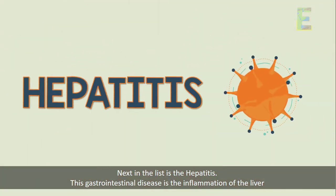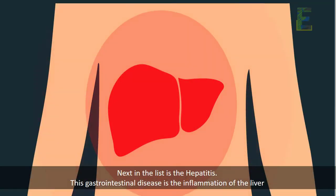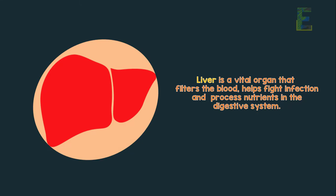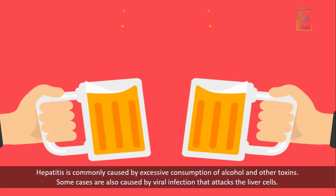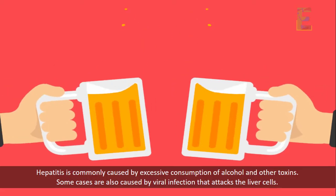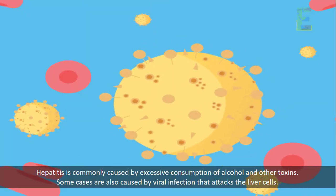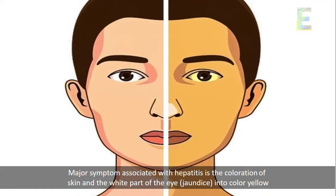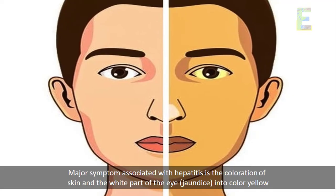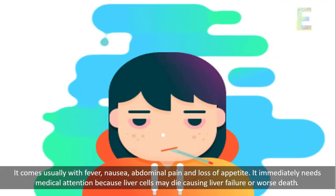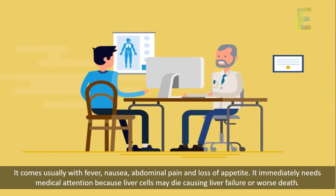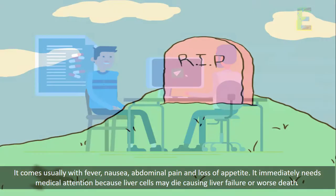Next in the list is hepatitis. This gastrointestinal disease is the inflammation of the liver. The liver is a vital organ that filters the blood, helps fight infection, and processes nutrients in the digestive system. Hepatitis is commonly caused by excessive consumption of alcohol and other toxins. Some cases are also caused by viral infection that attacks the liver cells. A major symptom associated with hepatitis is the coloration of the skin and the white part of the eye, or jaundice, turning color yellow. It usually comes with fever, nausea, abdominal pain, and loss of appetite. It immediately needs medical attention because liver cells may die, causing liver failure or worse, death.